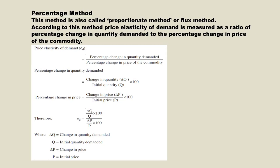Here, ΔQ stands for change in quantity demanded, Q is initial quantity demanded, ΔP is change in price, and P is initial price. Simplifying, we get the formula: ED = (ΔQ/Q) × (P/ΔP). This is the formula for calculating price elasticity of demand by the percentage method or proportionate method.